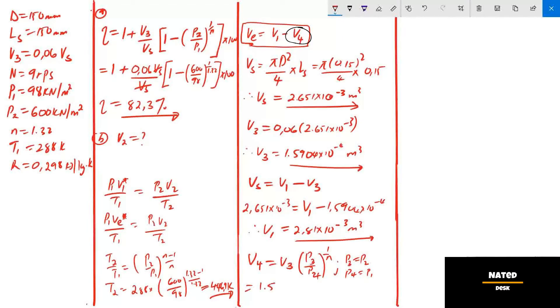V4 equals 1.59 times 10 to the exponent minus 3 cubic meter times 600 divide by 98 all close bracket to the power 1 over 1.32. So V4 equals 6.277 times 10 to the power negative 4.